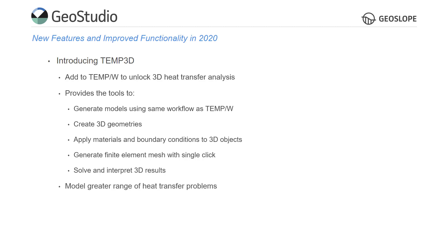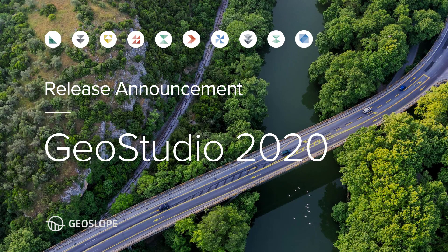Temp3D allows for the analysis of a large range of heat transfer problems, including the impact of infrastructure on permafrost, the design of active and passive mitigation methods, the design of artificial ground freezing systems, and the effects of climate change. Thanks for watching and enjoy using GeoStudio 2020.